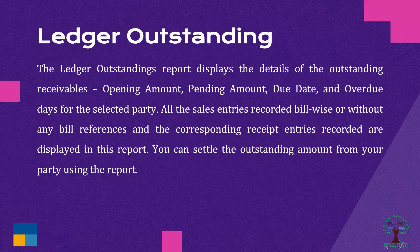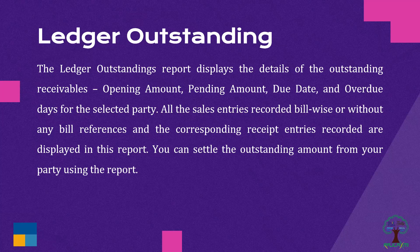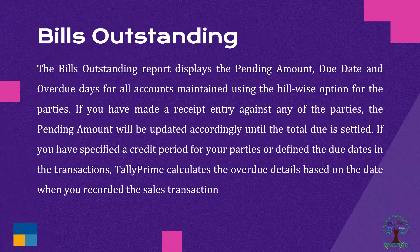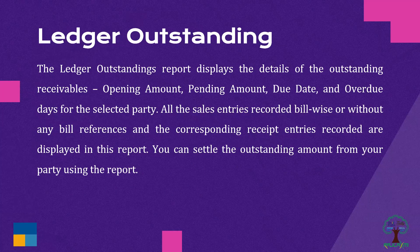Ledger Outstanding: The ledger outstanding report displays the details of outstanding receivables — the opening amount, pending amount, due date, and overdue days for the selected party. All entries recorded bill-wise or without any bill references, and the corresponding receivables entries, are displayed in this report. You can settle the outstanding amount from your party using this report.